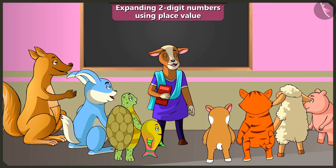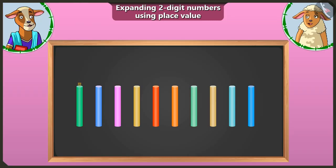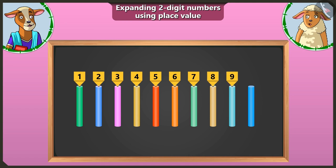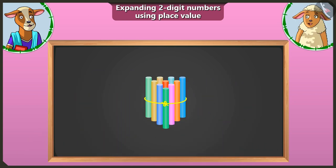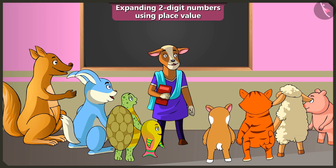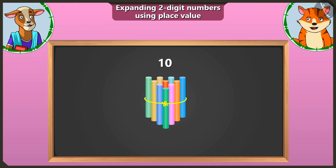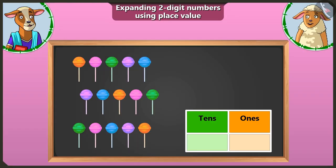Children, in the last video you learned to make bundles of tens. So now Lily, make a bundle of ten and show us. Lily ties 1 through 10 chalks together. It has become a bundle of ten. Well done, Lily! Can you tell us how to write the figure ten here? Correct, but I will show you another way of writing it.